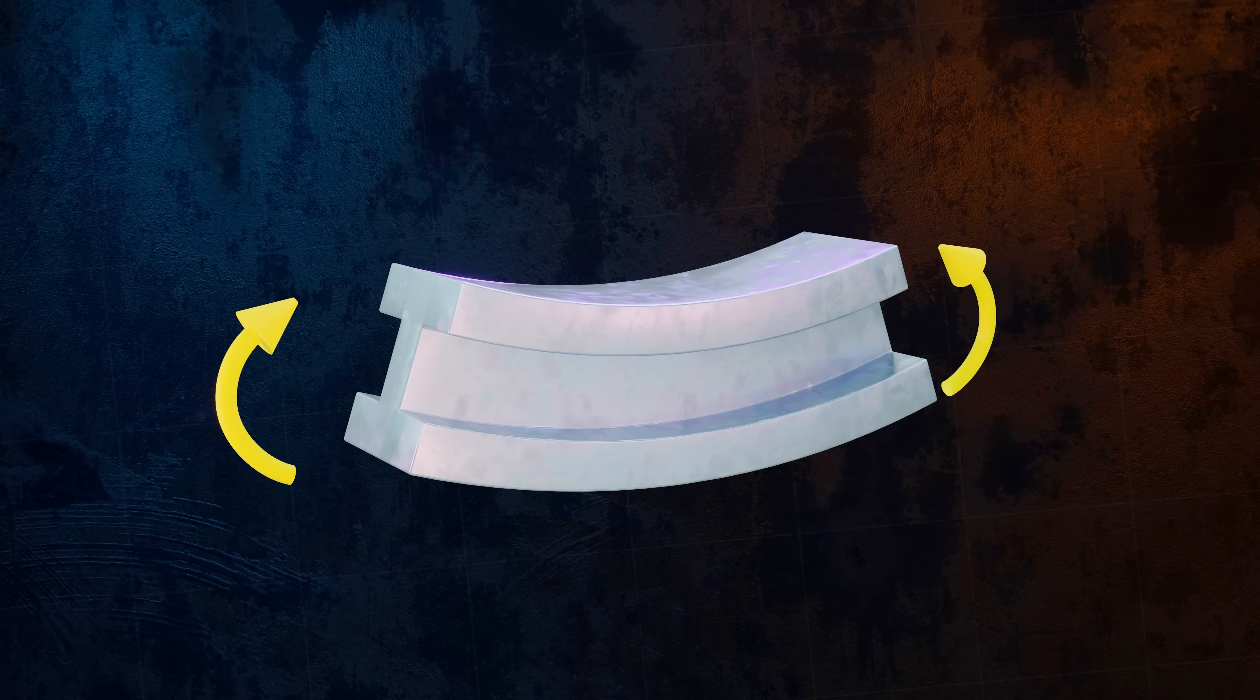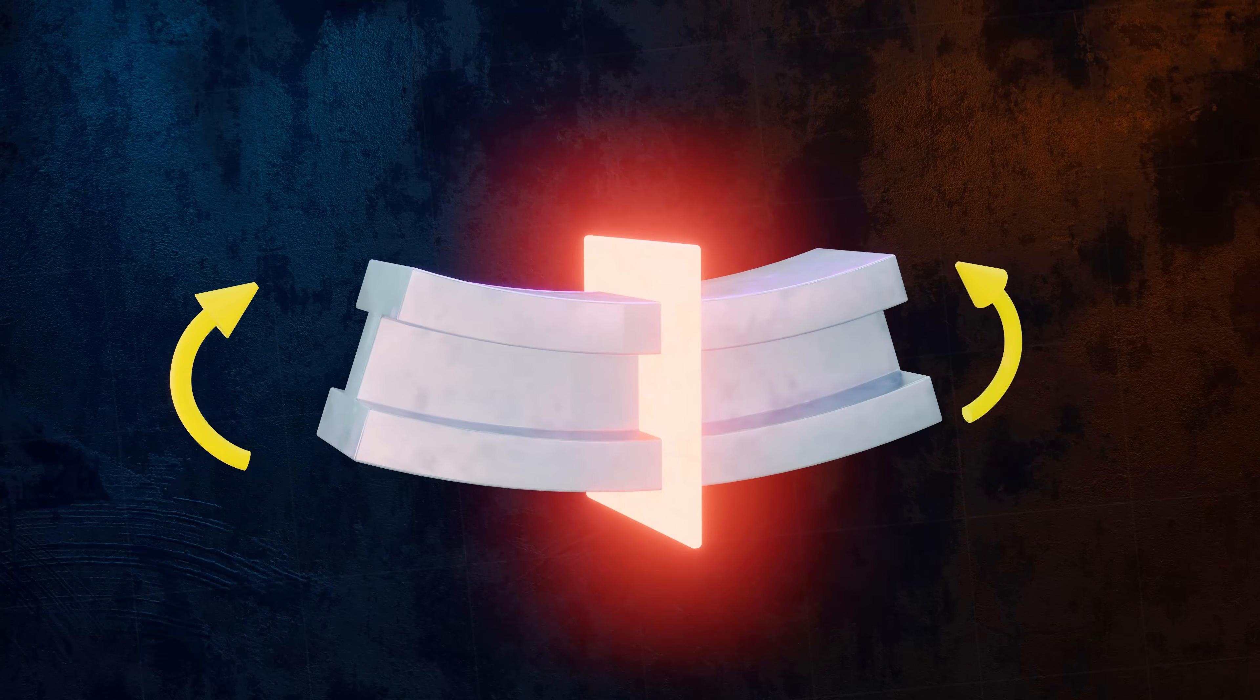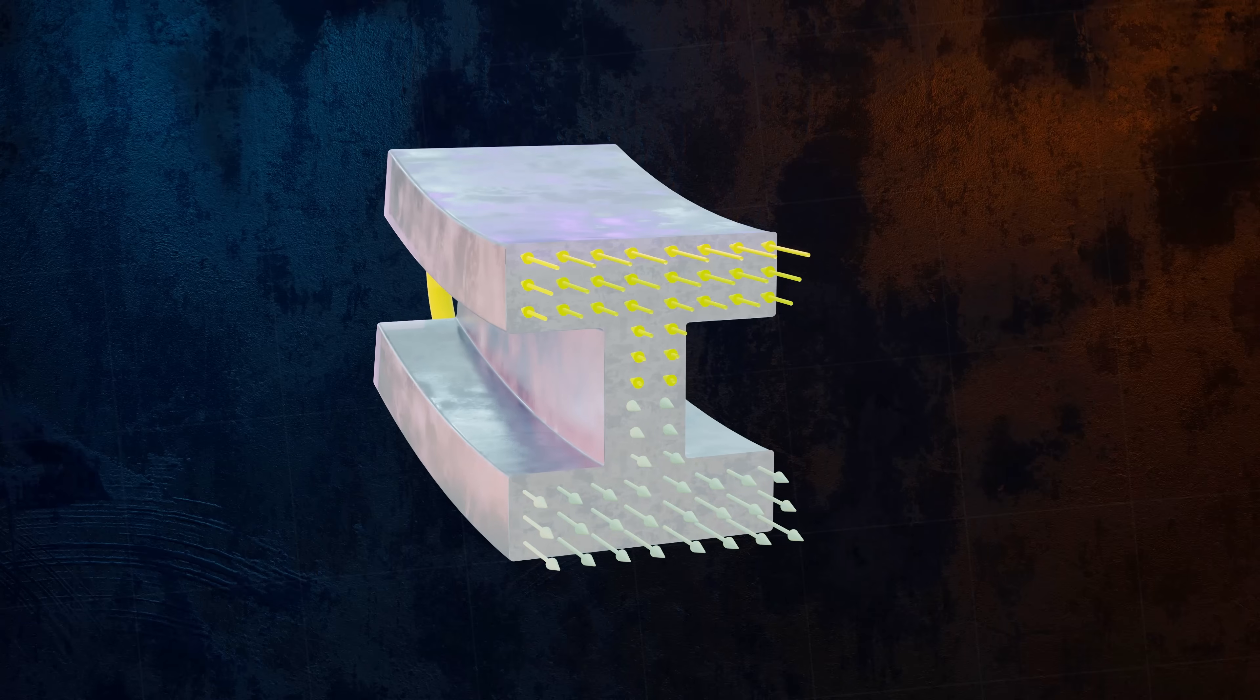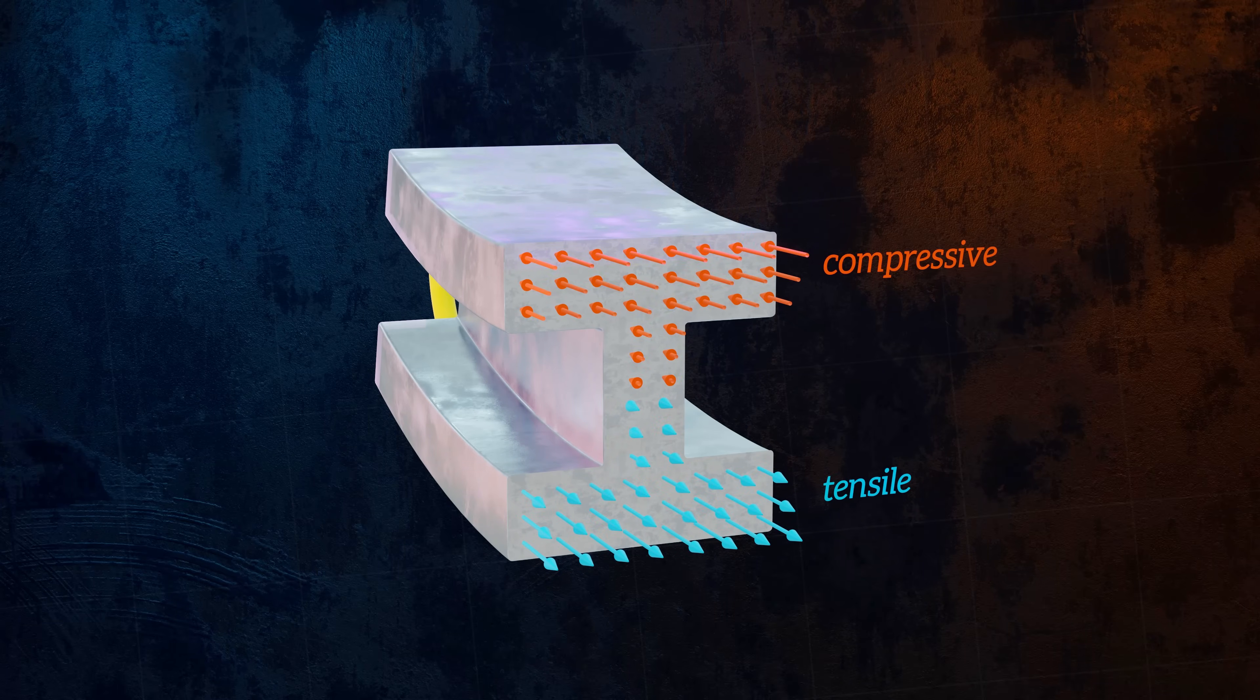The stress distribution in a beam that is bending, for example, will be more complex. Stresses will be tensile on one side of the cross-section, but compressive on the other.